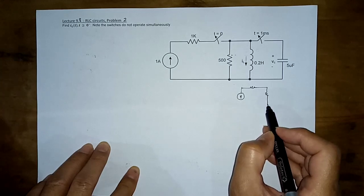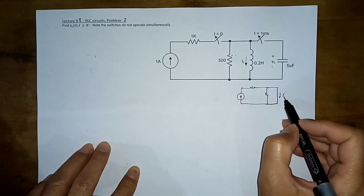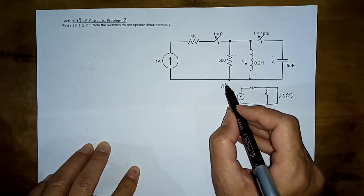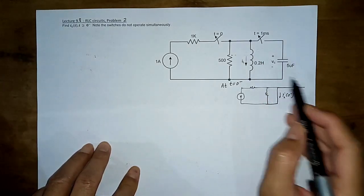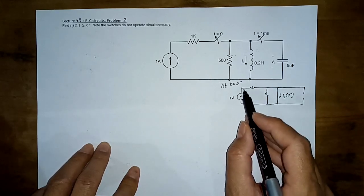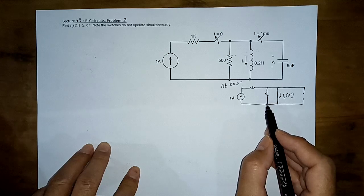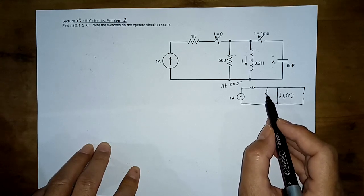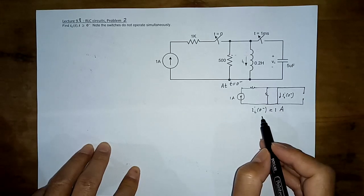The circuit at T = 0 minus — before the first switch was thrown open — has a current source, a resistor, and the inductor shorted. The capacitor is open-circuited. We have a 1 ampere current source with some resistor in series, so 1 ampere flows to this node. That current has two paths, and since there is a short circuit across the resistor, all current flows through the short.